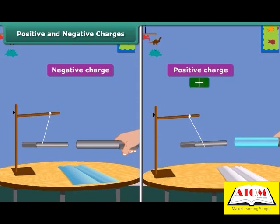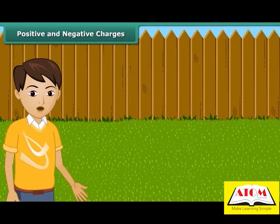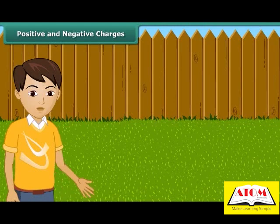Merely as a convention, charge on a glass rod rubbed with silk is taken as positive, and that of an ebonite rod rubbed with woolen cloth is taken as negative. From the earlier activity, we can conclude that like charges repel each other and unlike charges attract each other.